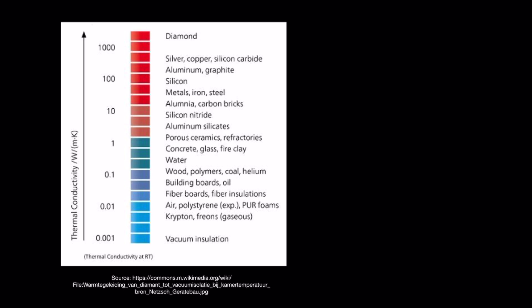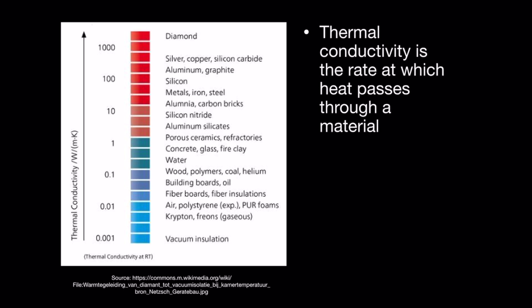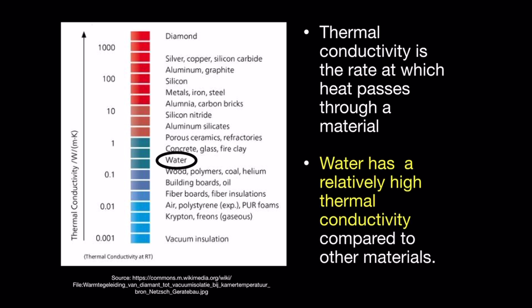Now let's look at the property of thermal conductivity. This table shows the thermal conductivity of a variety of different materials. Thermal conductivity is the rate at which heat passes through a material. Water has a relatively high thermal conductivity compared to other materials such as air, meaning water allows heat to pass through it at a much greater rate. Air only allows heat to pass through at about 5% of the rate that water does, and fats allow heat to pass through at only about 25% of the rate water does.